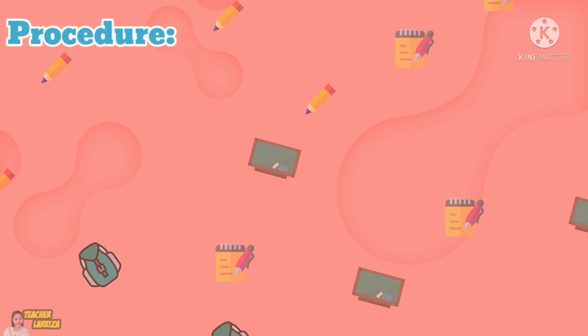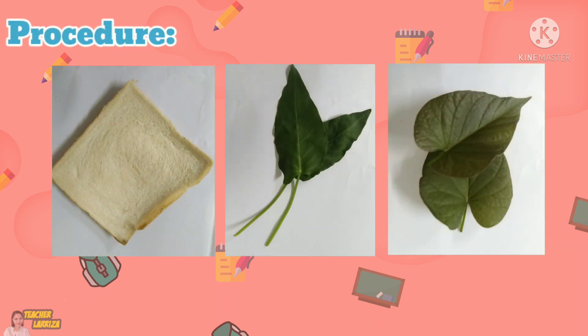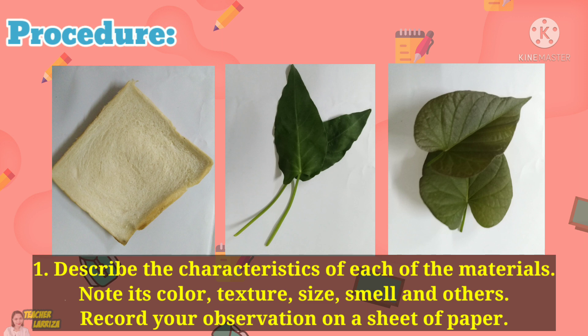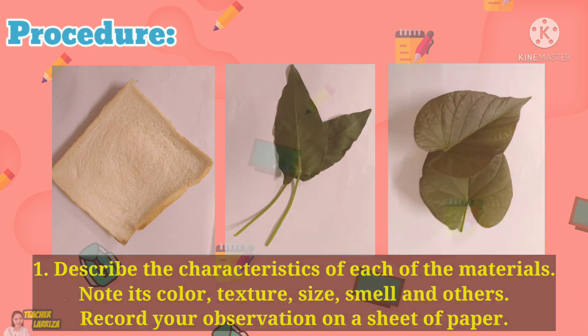Here's what you're going to do. After preparing all the materials needed for today's activity, first, take note of the characteristics of each of the materials given to you — its color, texture, size, and smell. You may record your observations on your data table on a sheet of paper.